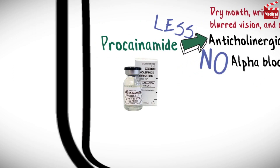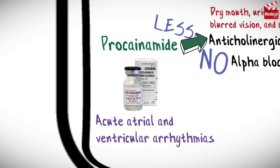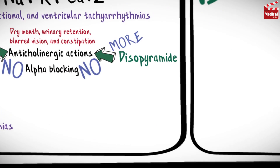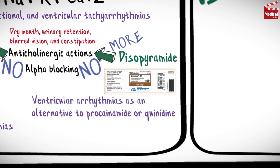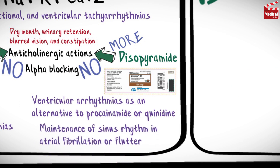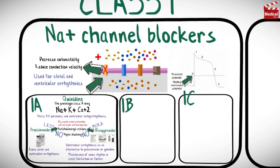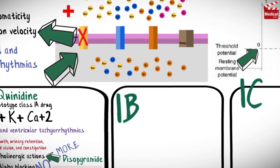Procainamide is available only in an intravenous formulation and may be used in the treatment of acute atrial and ventricular arrhythmias. Disopyramide is used in the treatment of ventricular arrhythmias as an alternative to procainamide or quinidine, and may also be used for maintenance of sinus rhythm in atrial fibrillation or flutter.